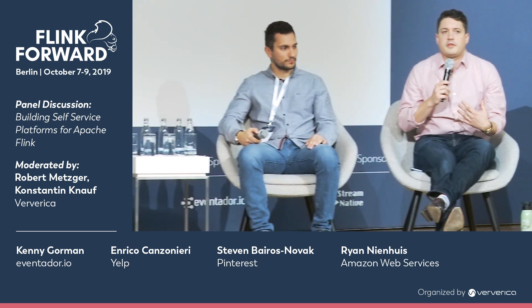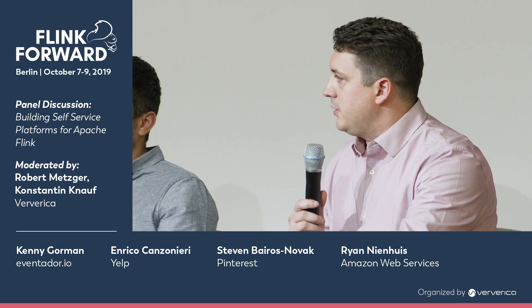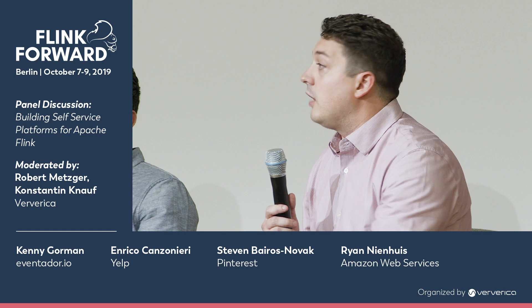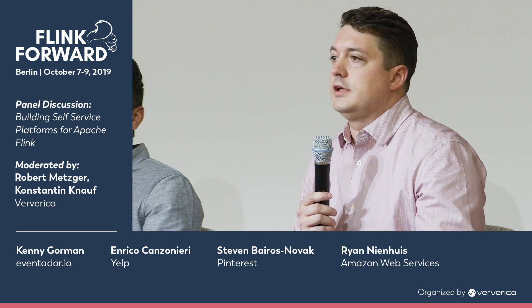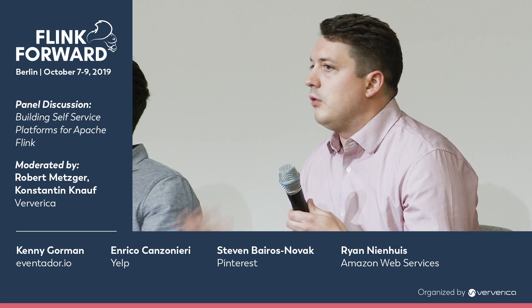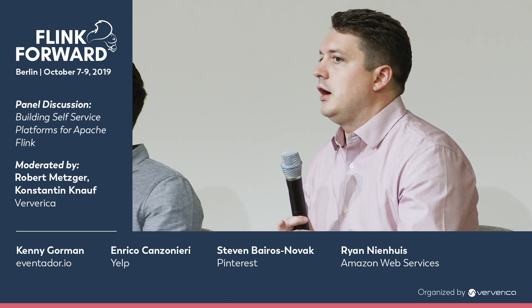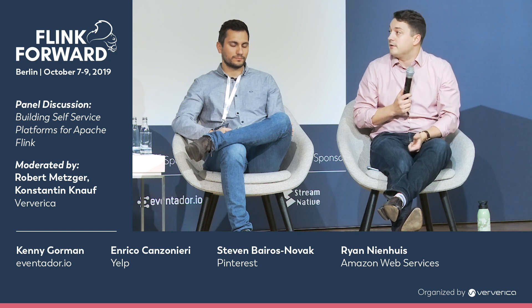One thing that resonated — at AWS we're all about giving options. Flink's layered API approach is an awesome advantage: from the DataStream API to the Table API and SQL API, it lets platform builders offer different experiences. Lower-level primitives for flexibility and control, or abstractions for those who don't need that level of control and want to build something quickly without ramping up on all Flink concepts. The SQL experience provides a much easier on-ramp.